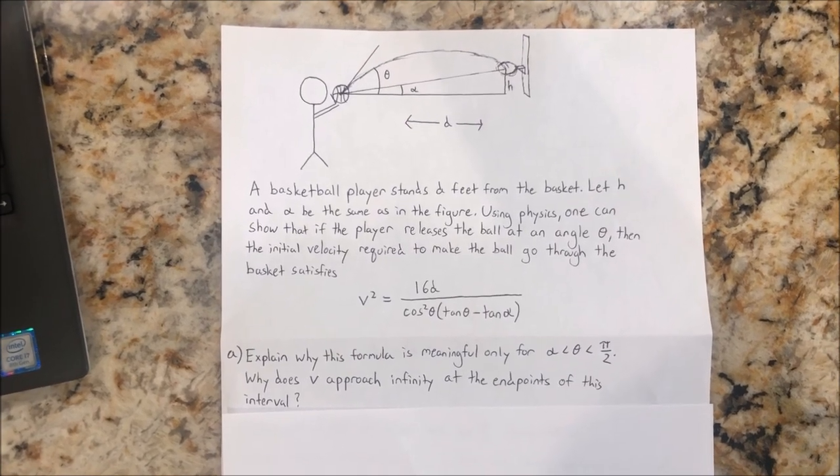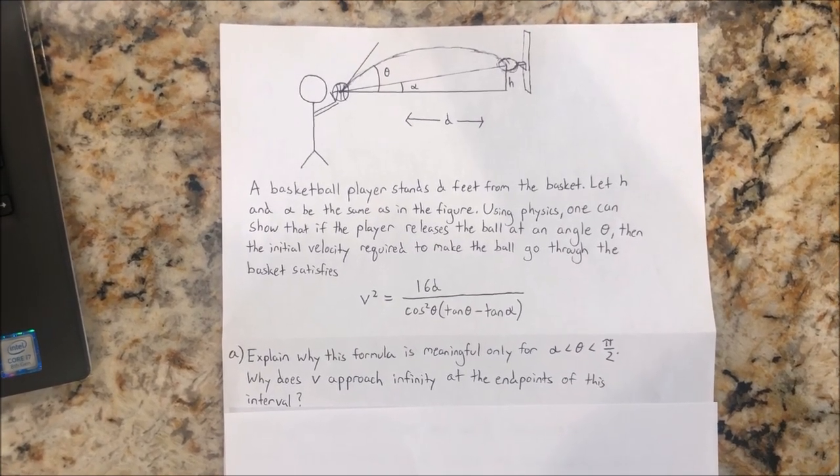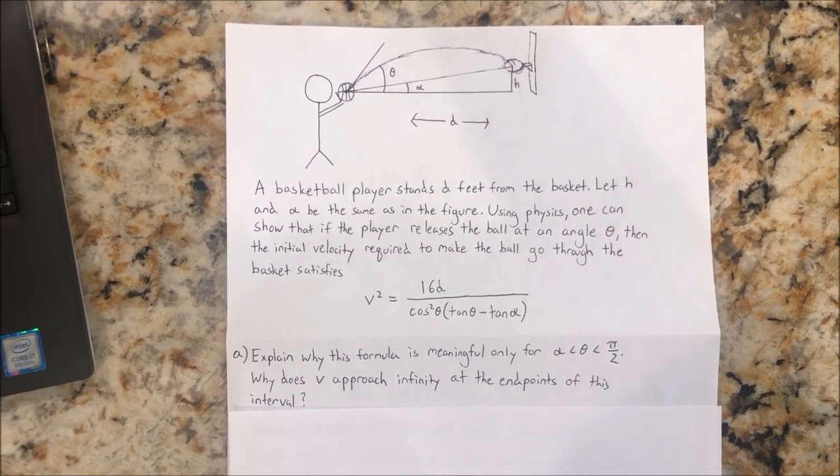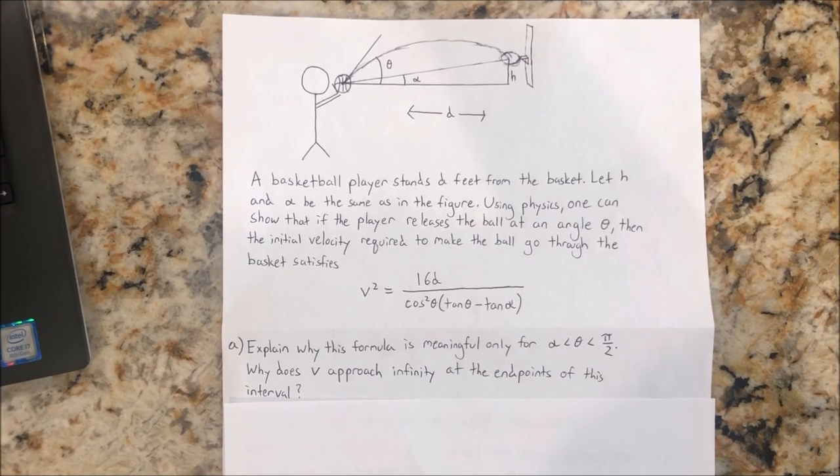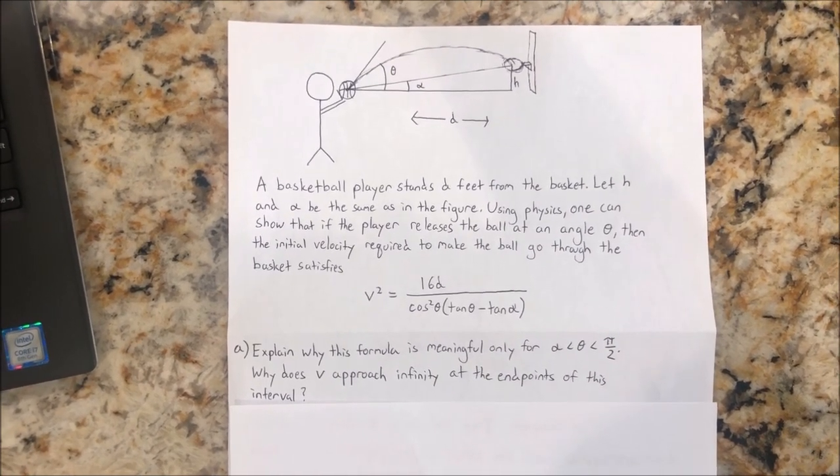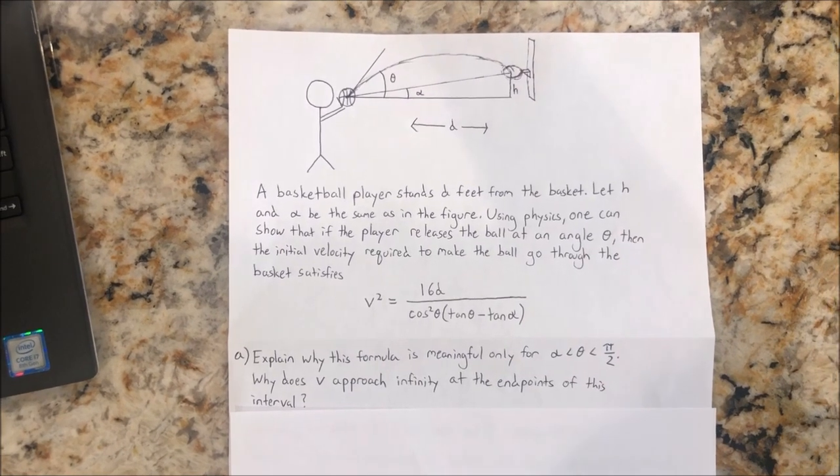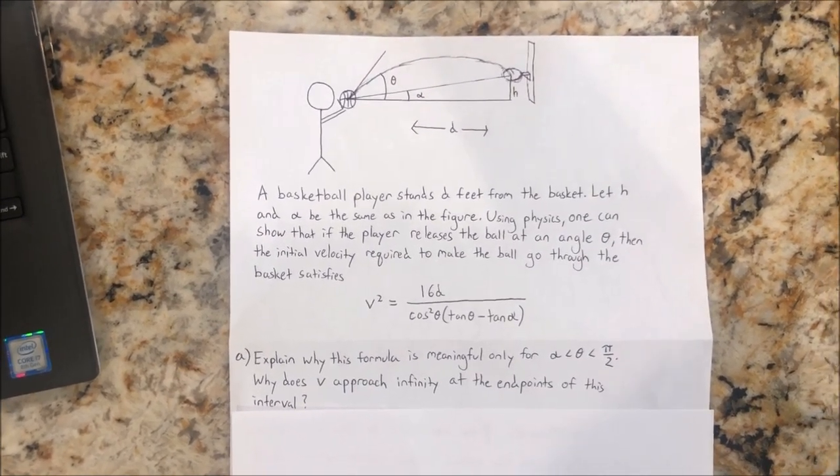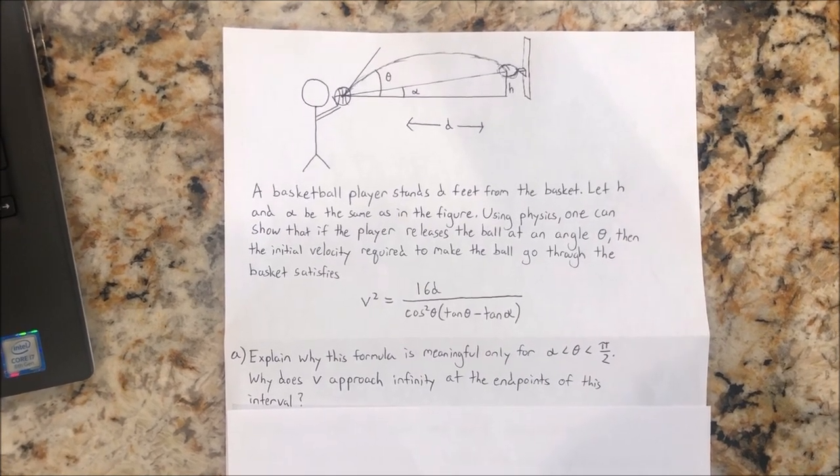If the angle alpha is extremely close to zero, the ball is shot almost directly at the basket, so that it must be launched with great speed, as it can only fall an extremely short distance on the way through the basket. On the other hand, if the angle alpha is extremely close to pi over 2, the ball is launched almost vertically. This requires the ball to travel at a great distance upward in order to travel the necessary horizontal distance. In either one of these cases, the ball has to travel at an enormous speed.